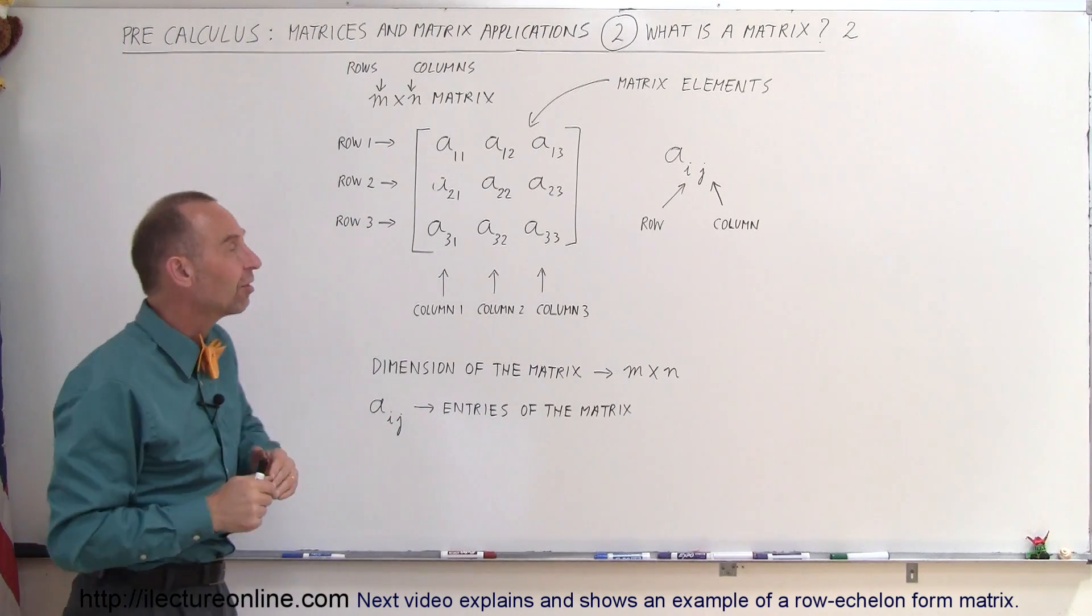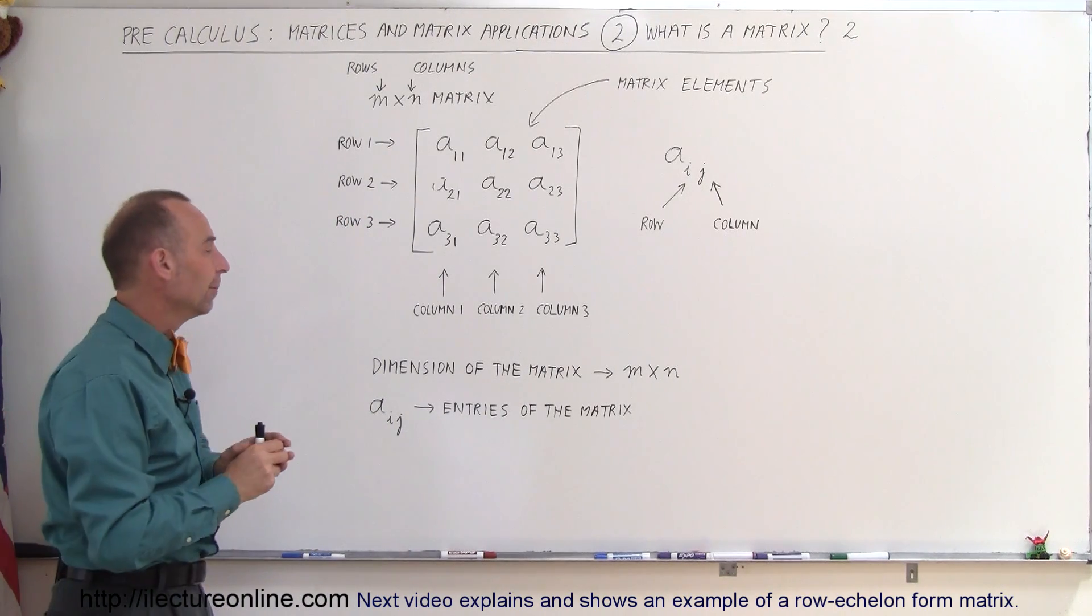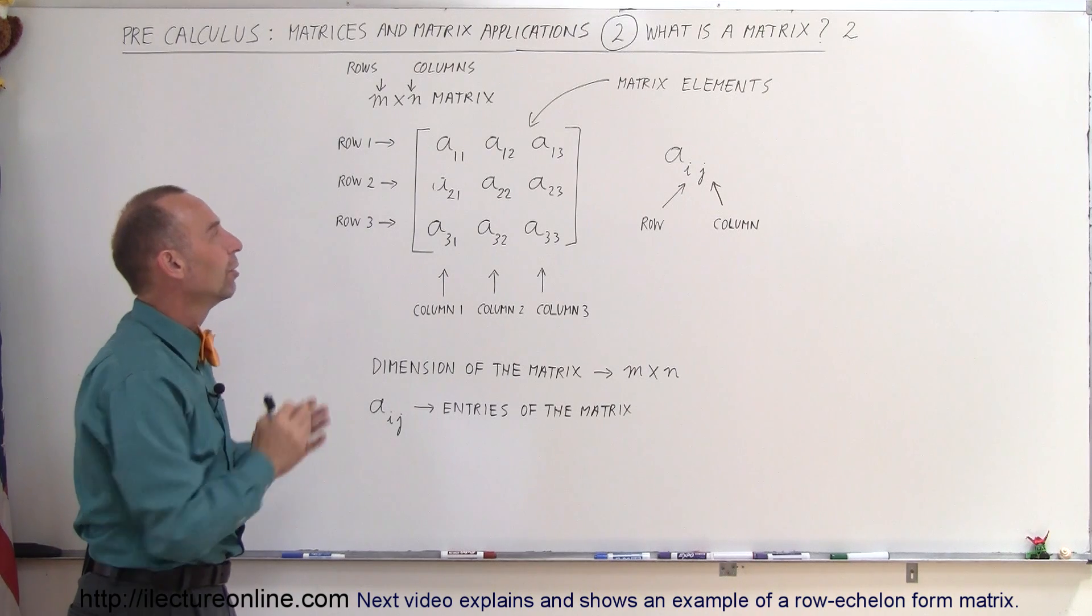So the first number always represents the row; the second number represents the column. And that's how we term the matrices.